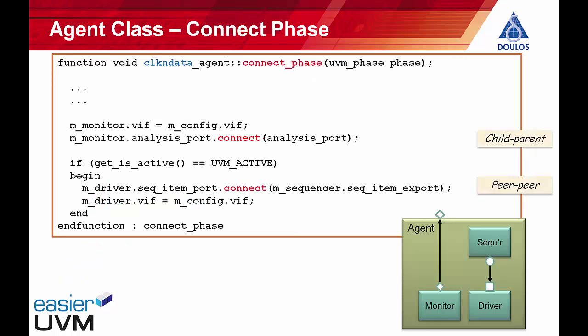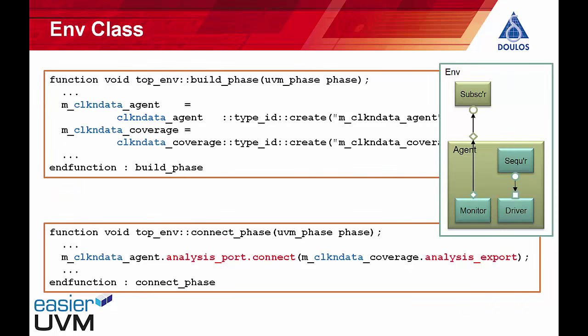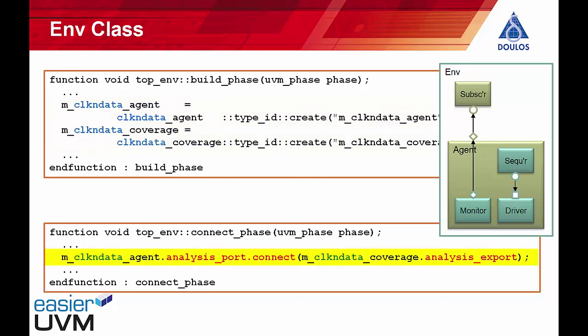Moving up in the component hierarchy, in the connect phase of the agent we can see two connections: the analysis port on the monitor is connected to the analysis port on the agent, and the peer-to-peer connection between the port on the driver and the export on the sequencer. Moving up further to the env class, in the build phase we instantiate the agent and subscriber components, and in the connect phase we call the connect method of the analysis port to connect the analysis port on the agent to the analysis export on the subscriber.